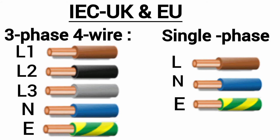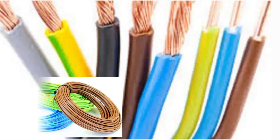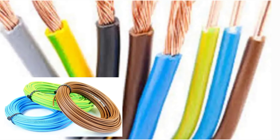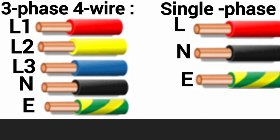Before I end this video, I would like to talk about the wiring color code used in Ghana. Ghana, like most African countries that were colonized by the British, usually adapts the British standard. Formerly in Ghana, we were using the old version of the BS 7671 standard, in which red is used for line 1, yellow for line 2, blue for line 3, black for neutral, and green with yellow stripes for earth. For single-phase, red was used for live, black for neutral, and green with yellow stripes for earth.